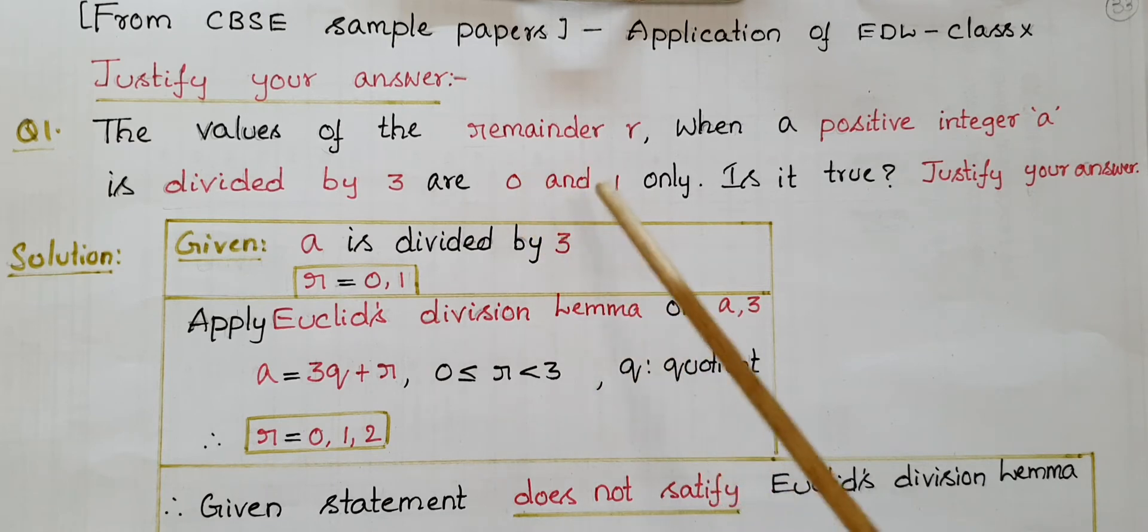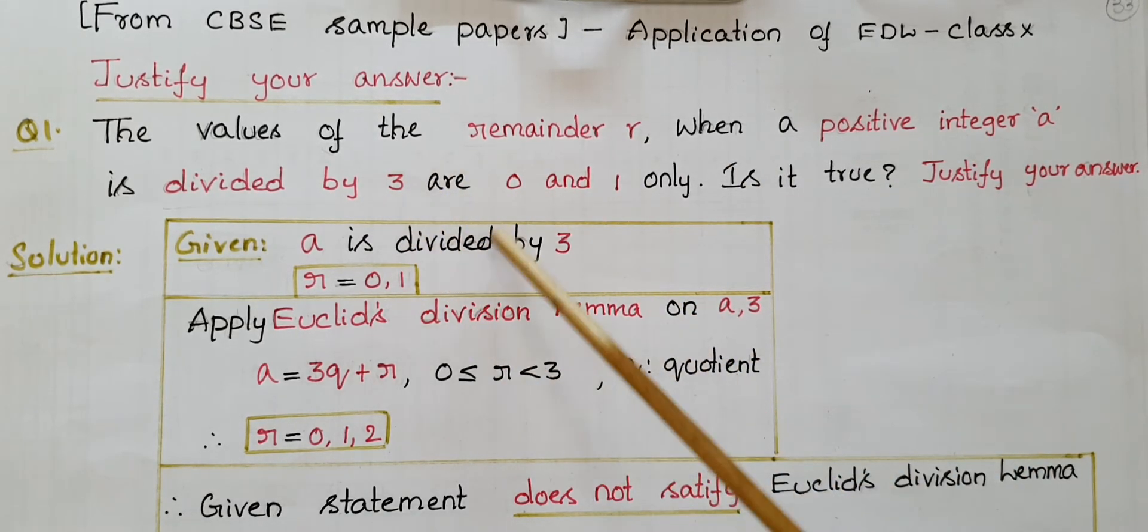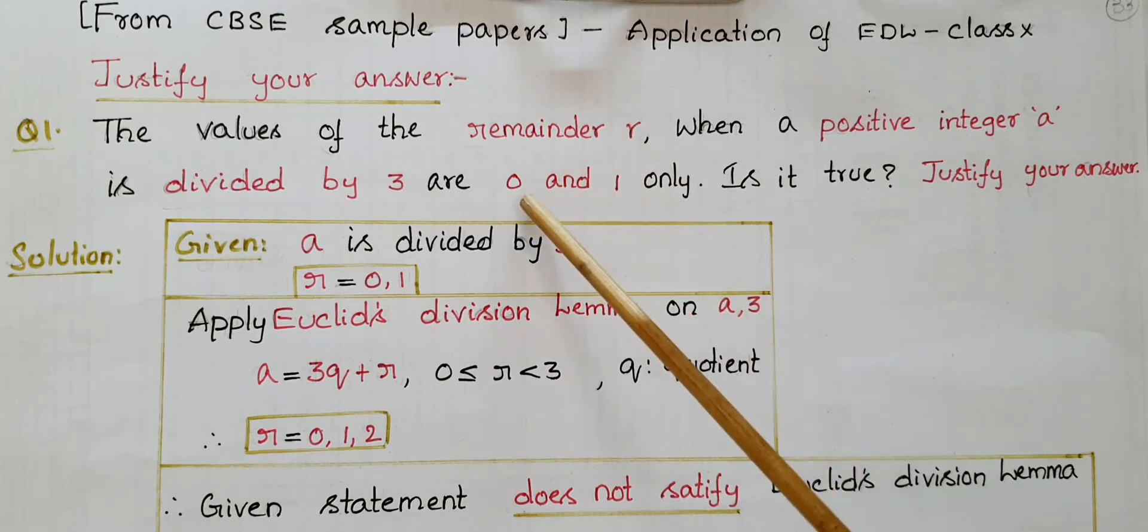So here a is a positive integer which is divided by 3. The remainder r values are given as 0 and 1, so r equals 0 comma 1.